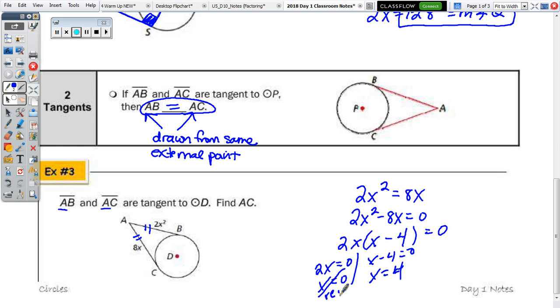So, we're going to reject the 0 and X is 4. So, AC is 8 times 4 or you could do 2 times 4 squared. So, 8 times 4 or again 2 times 4 squared. Yep, 2 times 16 or 8 times 4 is 32.